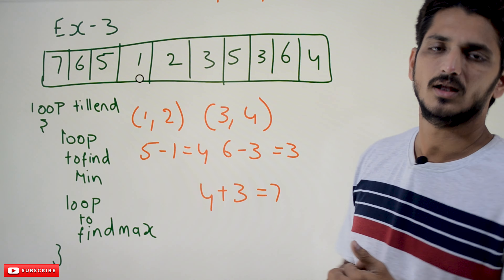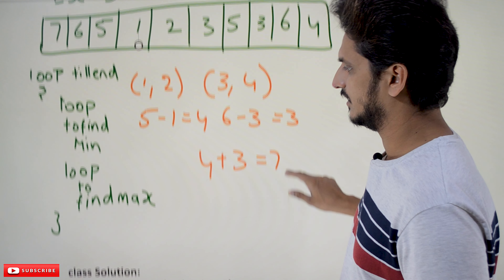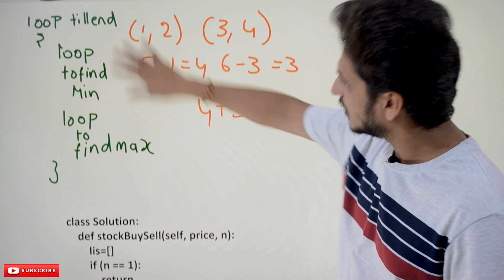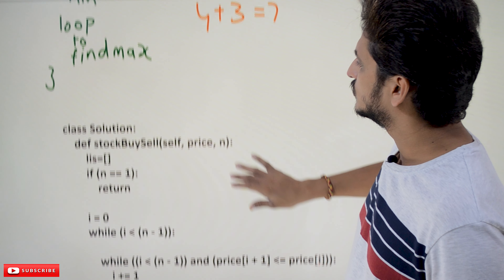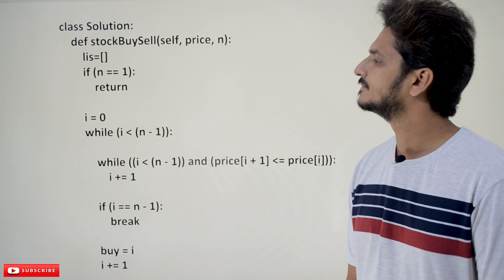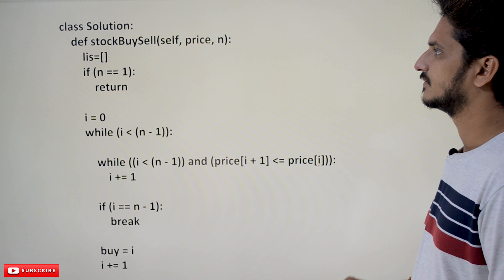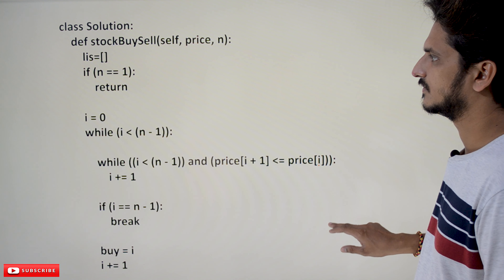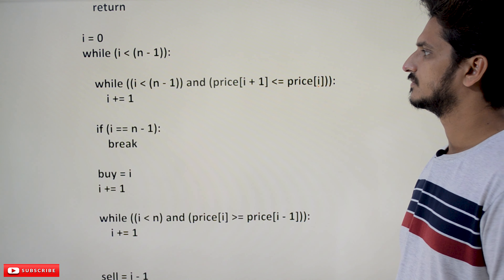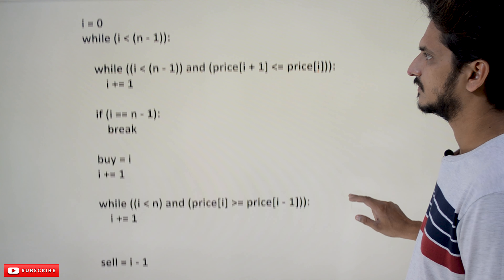Applying this logic: buy at value 1, sell at value 5 — profit is 4. Next, buy at value 3, sell at value 6 — profit is 6 minus 3 equals 3. Total profit is 4 plus 3 equals 7. After that there is nothing left to buy and sell. So the total profit you display is 7.